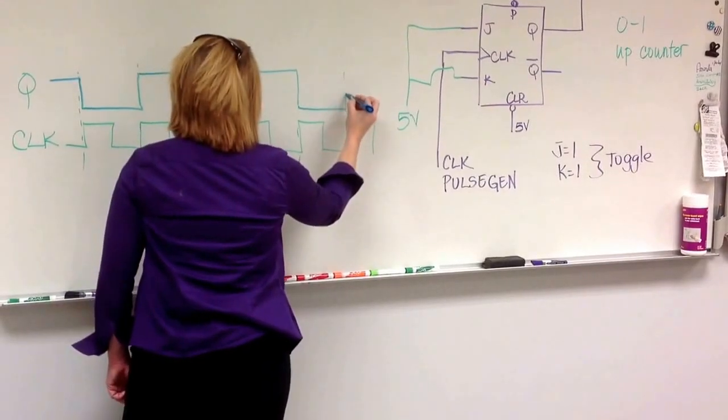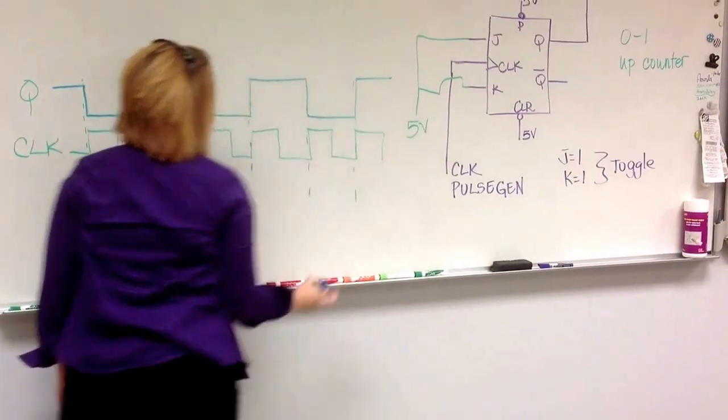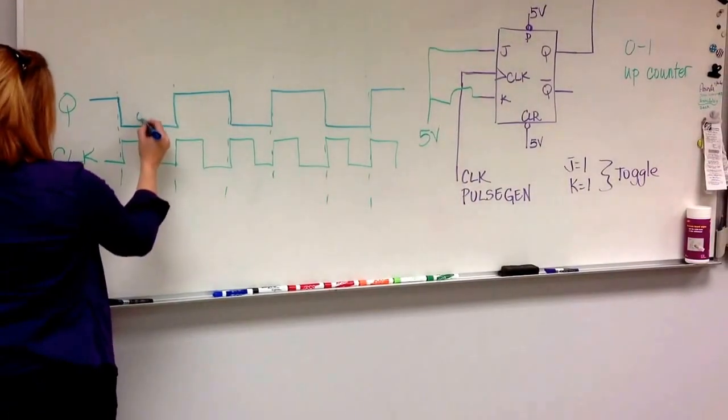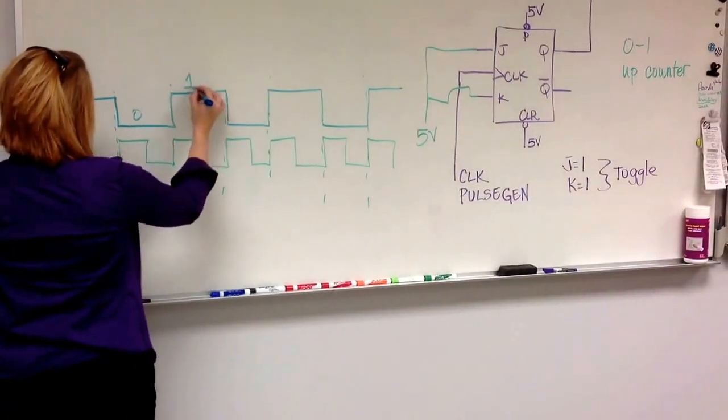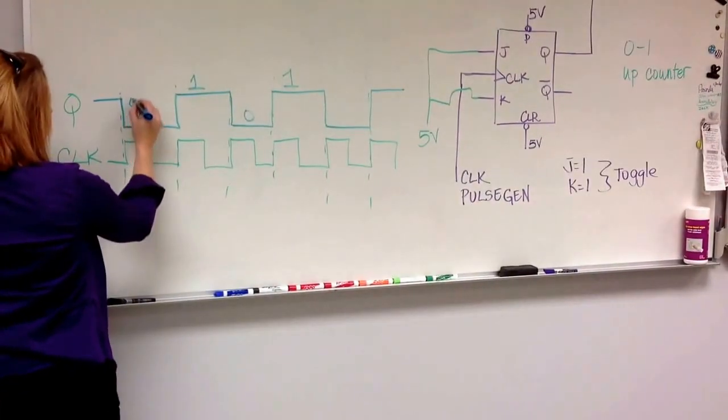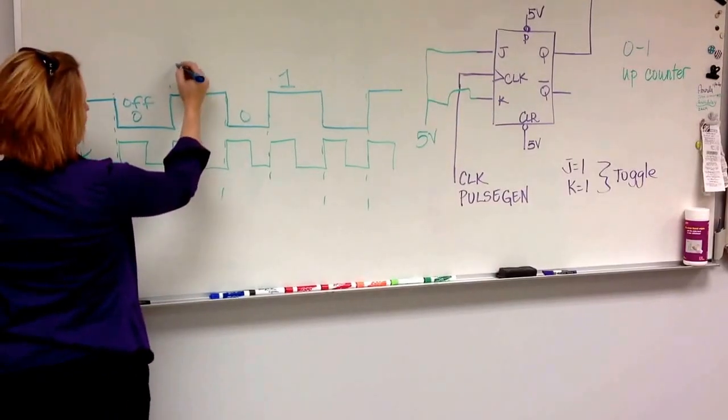So this is not only a counting circuit, it's what we call the divide by 2 circuit. So here it's 0, here it's 1, here it's 0, here it's 1. So here the LED is off, and here my LED is on.